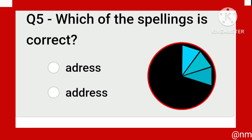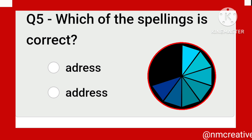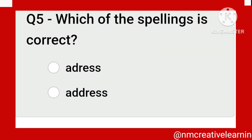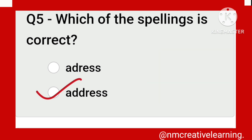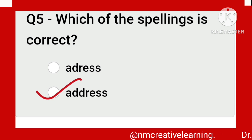Which of the spellings is correct? Try to find out. This one — double D: A-D-D-R-E-S-S. This is the correct spelling.